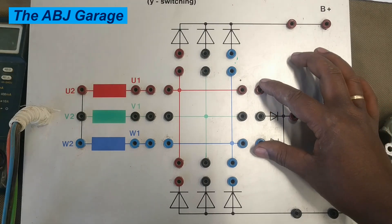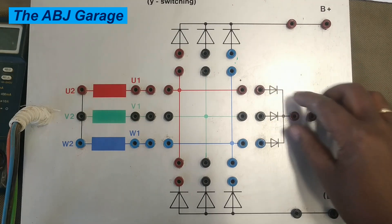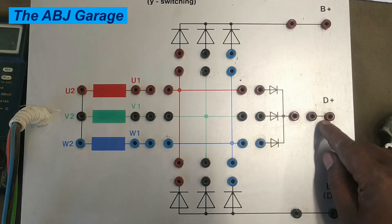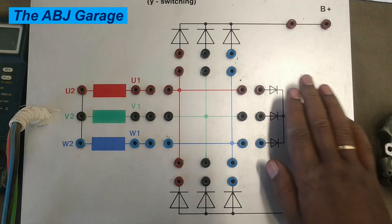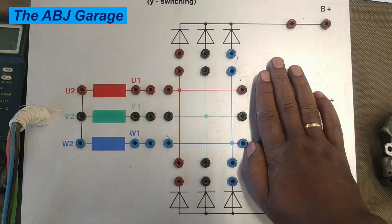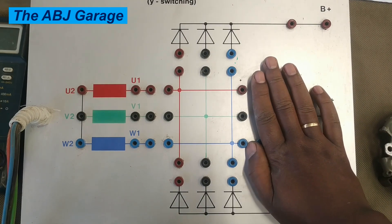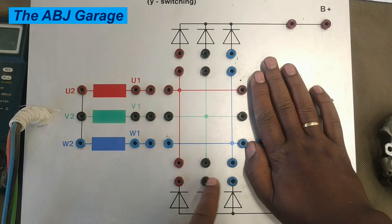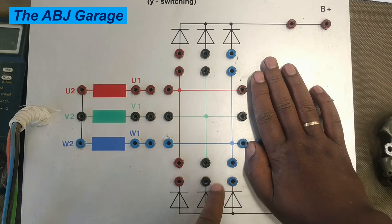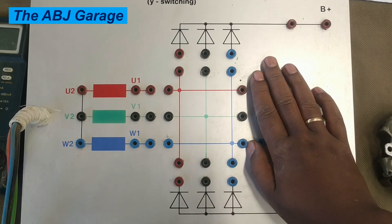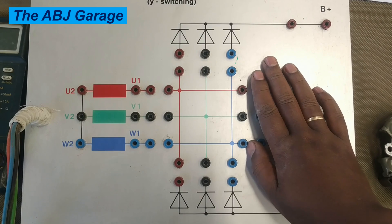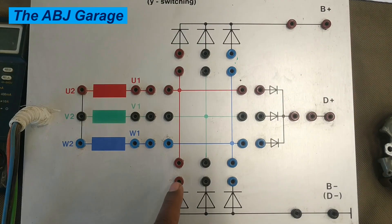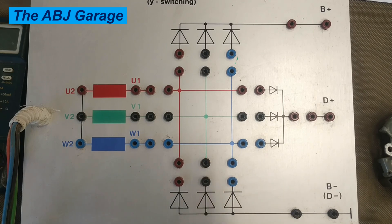On some alternators, we have the field coils that are powering the field circuit. But irrespective of the construction, these six diodes are mandatory — these are the rectifier diodes. In this video, we are going to have a look at how to inspect operation of the rectifier diodes.